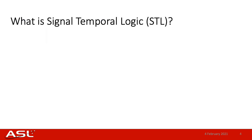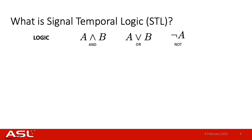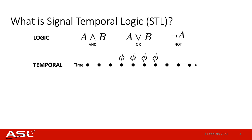The first step is to translate these rules or task specifications into a form that is readable by a computer. We approach this using signal temporal logic, or STL. STL is a logic language that provides a systematic way to describe spatial and temporal properties of a signal, where a signal is a real-valued time series, such as the position of a robot as it moves through space and time.